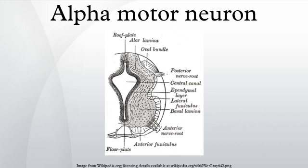Alpha motor neurons transmit signals as action potentials — rapid changes in electrical activity that propagate from the cell body to the end of the axon. To increase the speed at which action potentials travel, alpha motor neuron axons have large diameters and are heavily myelinated by both oligodendrocytes and Schwann cells. Oligodendrocytes myelinate the part of the axon that lies in the central nervous system, while Schwann cells myelinate the part that lies in the peripheral nervous system. The transition between the CNS and PNS occurs at the level of the pia mater, the innermost and most delicate layer of meningeal tissue surrounding components of the CNS.